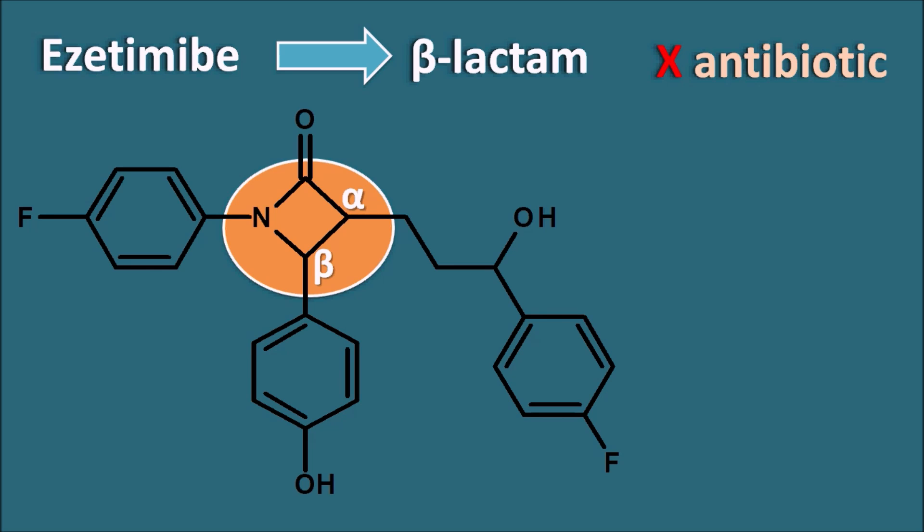This beta-lactam is the central ring to which the other rings are attached. To this nitrogen, a para-fluorophenyl ring is attached, and at the beta position, a para-hydroxyphenyl ring is attached. At the alpha position, a 3-hydroxypropyl side chain is present, which is further attached with a para-fluorophenyl ring system. In this way, Ezetimibe has a large structure, but the central one is the beta-lactam ring.